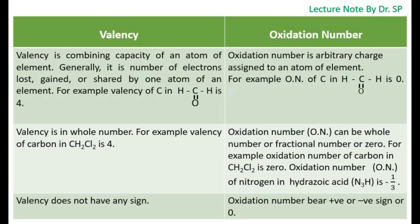Here valency and oxidation number of same atom carbon of same compound dichloromethane, CH2Cl2, is found 4 and 0. Hence we can say valency and oxidation number is different parameter.